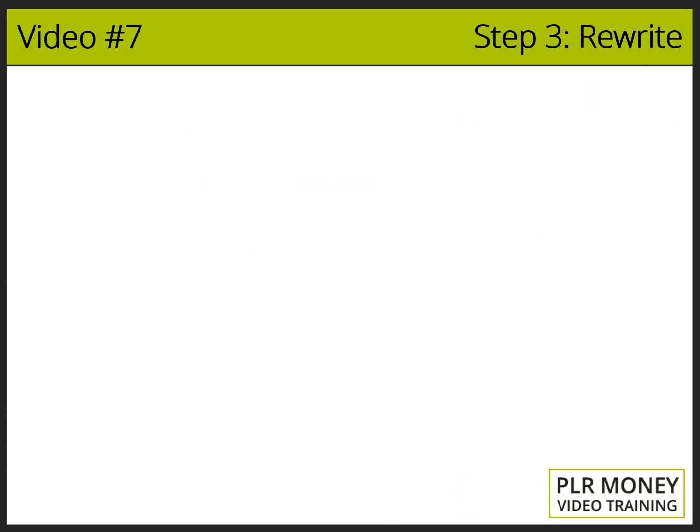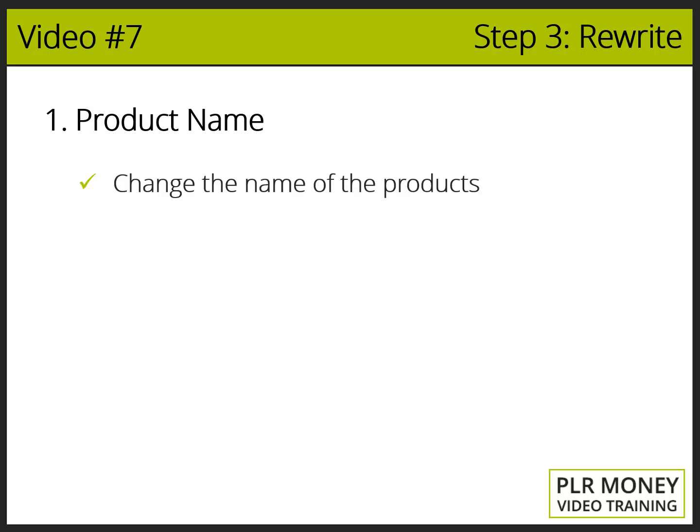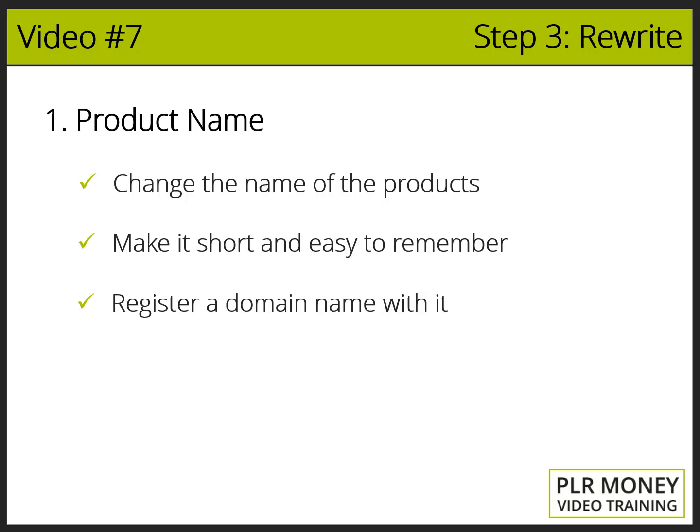Section one: product name. Change the name of the product, especially the first product you will use as a freebie for the first part of the sales funnel, which is the squeeze page, as well as the name of the main product. Try to make it short and easy to remember so you can easily register a domain name with it.